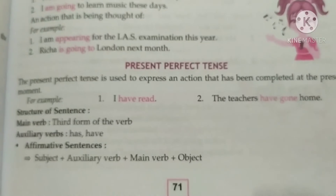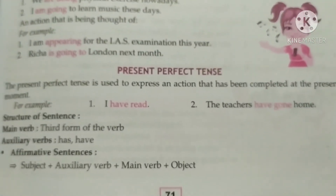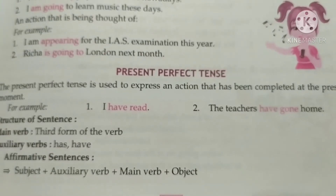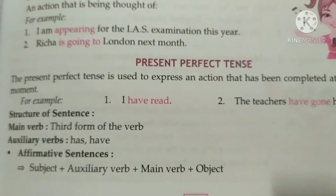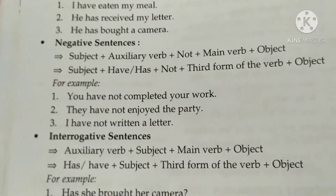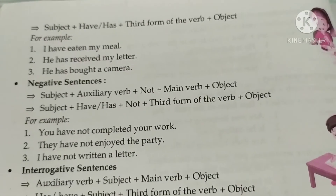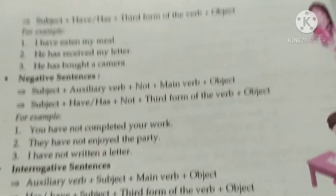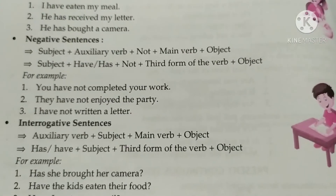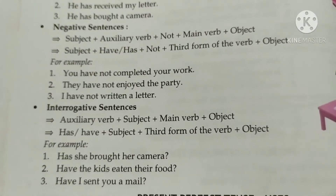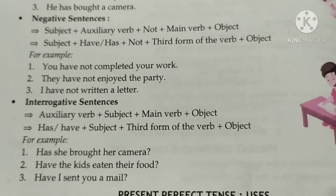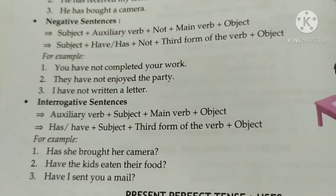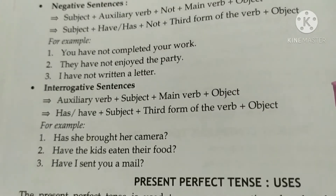Now, present perfect tense. It is used to express an action that has been completed at the present moment — for example, 'I have read,' 'The teachers have gone home.' In this tense, we use 'has' or 'have' and the third form of the main verb. Structure: Subject + has/have + third form of verb + object. Examples: 'I have eaten my meal,' 'He has received my letter,' 'He has bought a camera.' Negative: Subject + has/have + not + third form of verb + object. Example: 'They have not enjoyed the party.'